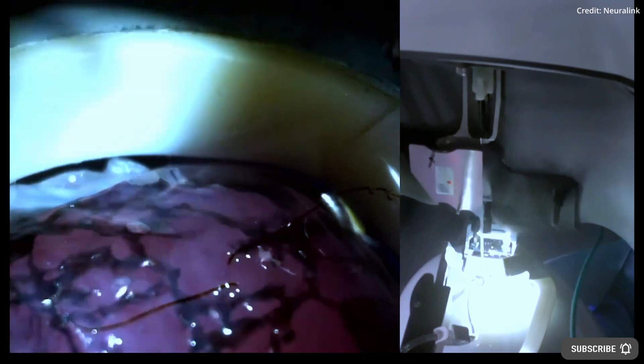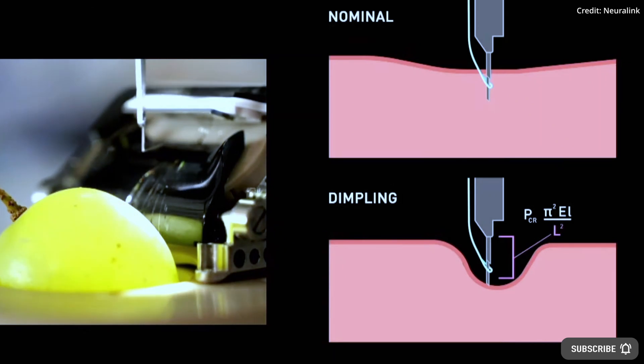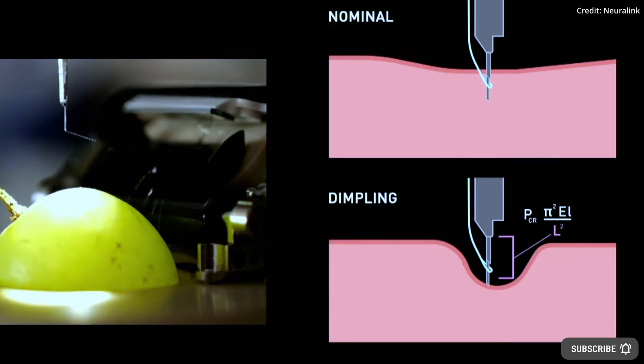The Neuralink N1 implant uses thin threads to connect to various areas of the brain, with the N1 Brain Computer Interface Device being about the size of a quarter. The N1 devices have 1,024 channels, which are each used for both stimulating and recording brain activity with artificial intelligence.